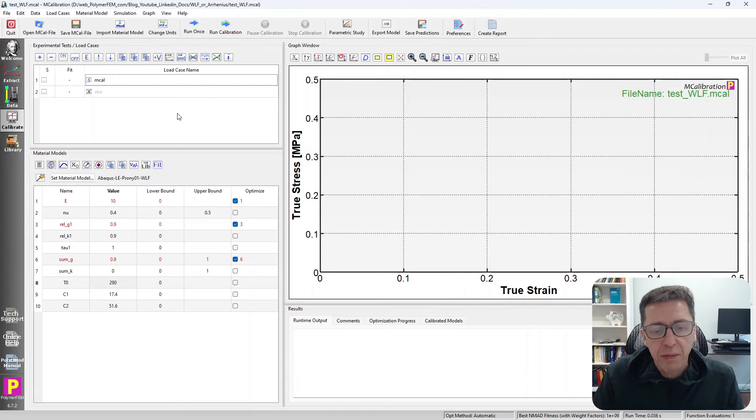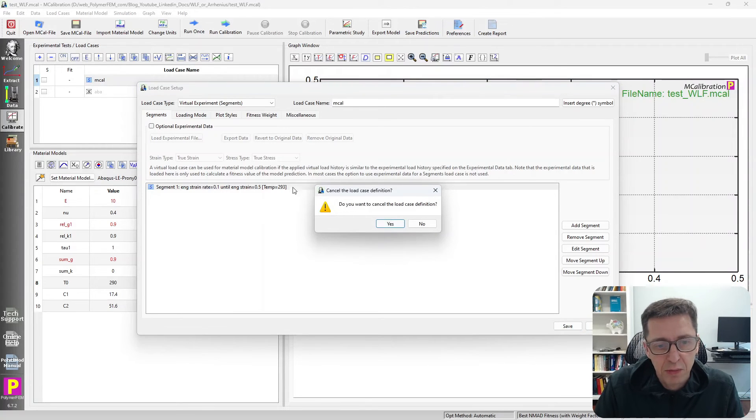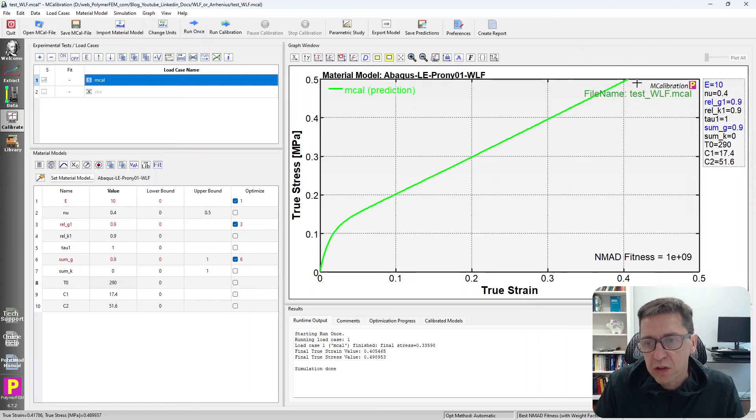Here's an MCalibration window where I have a uniaxial tension load case. I pull it to 50% strain at some strain rate, at the temperature 293. And then I have an Abaqus linear elastic Prony series. I just picked one Prony series term, for example, with a WLF equation. As you see, these are the parameters. And if I run this once, this is the results that I get. You see it goes up to about 0.5 here at the end.